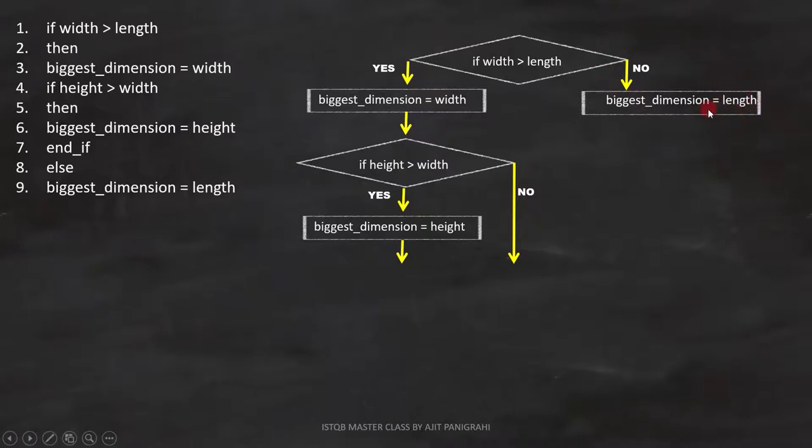Now let's focus on line number 10. If height is greater than length, this is a condition so we have to represent it like this in flowchart.